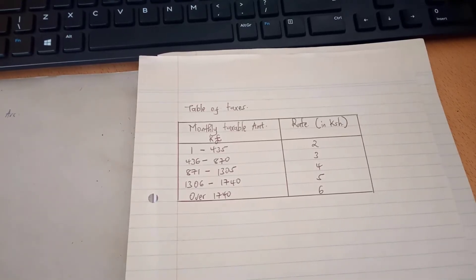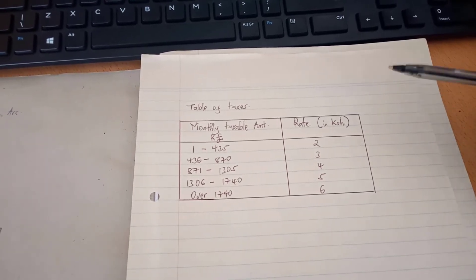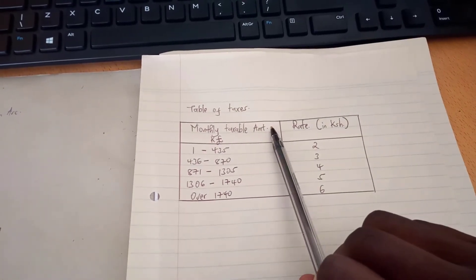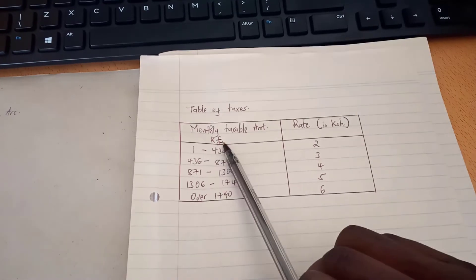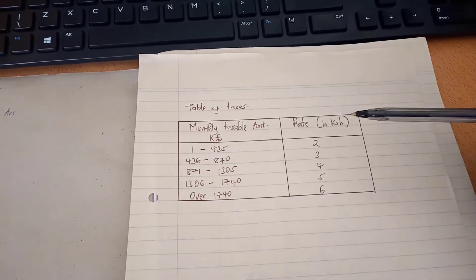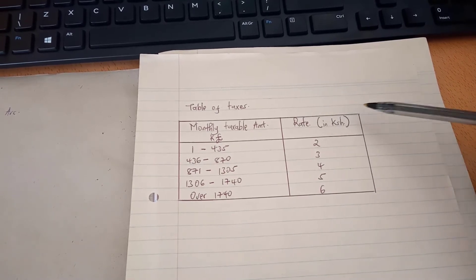Hello and welcome to another tutorial on income tax. On the screen is a table of taxes. When we look at the table of taxes, we have a monthly taxable amount in Kenyan pounds. Remember, this is every month. On the other side we have the rate that is in Kenyan shillings.